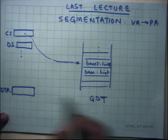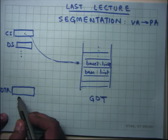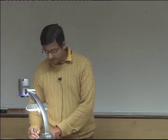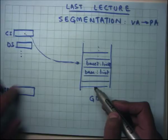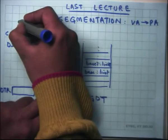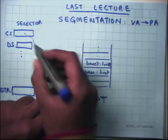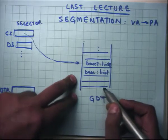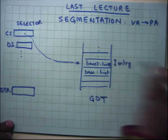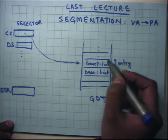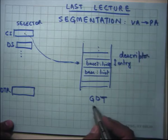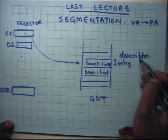The segment gives you a pointer into a structure called the global descriptor table, which also lives in memory. The address of the global descriptor table is stored in yet another register called the global descriptor table register. What the hardware does on each instruction is that it will dereference GDTR to get the address of GDT, then add the value of the segment selector multiplied by the entry size to get the appropriate segment descriptor.